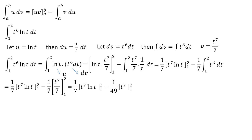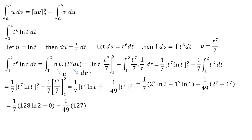Evaluating, we get minus 1 over 49 times (2 to the power of 7 minus 1 to the power of 7). This equals 1 over 7 times (128 times ln(2) minus 0) minus 1 over 49 times 127, giving the final answer of 128 ln(2) over 7 minus 127 over 49.